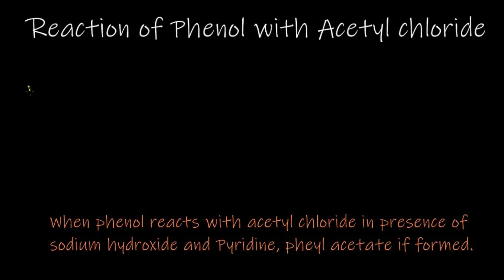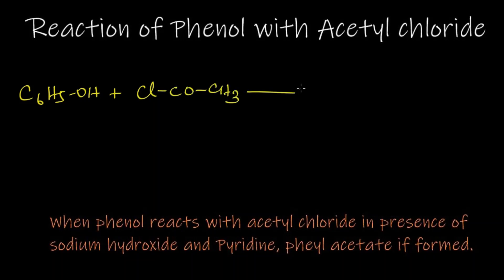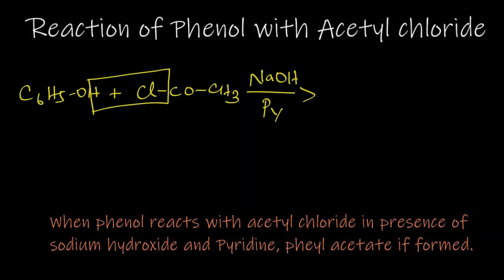C6H5OH is phenol. The formula for acetyl chloride is CH3COCl. For our convenience we are writing it as CH3COCl. Now we are going to react it in presence of sodium hydroxide and pyridine.